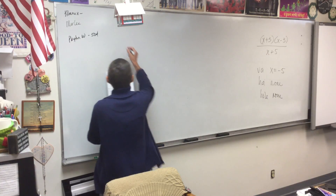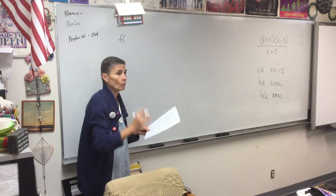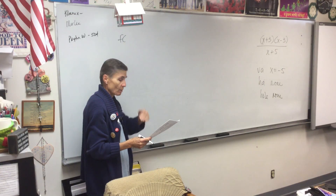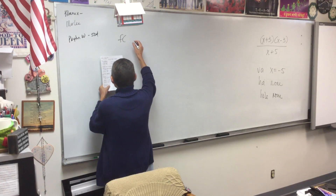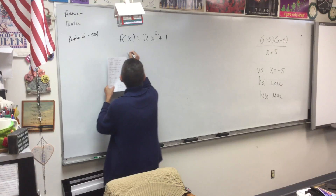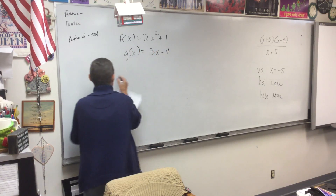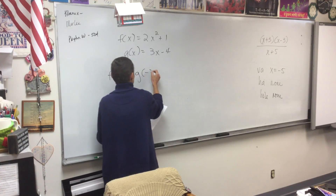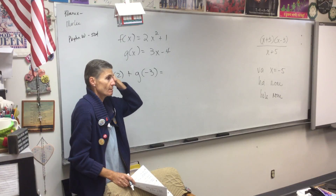We're going to start with number five. When you do this on your separate paper, you're free to go out of order - so we're doing 5, 4, 3. Please do this on separate paper. f of x is 2x squared plus 1, g of x is 3x minus 4. Problem number one: f of 2 plus g of negative 3. This is the one we are not missing - this is so simple.